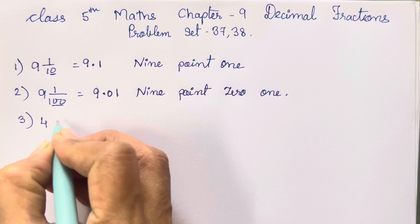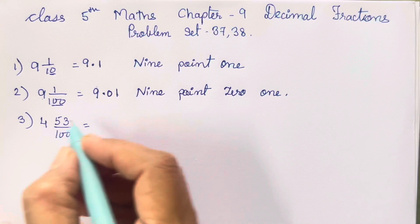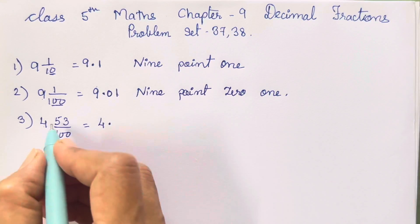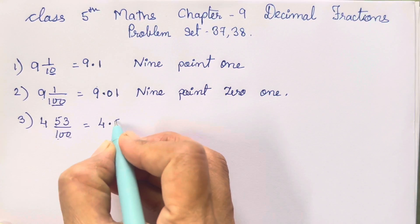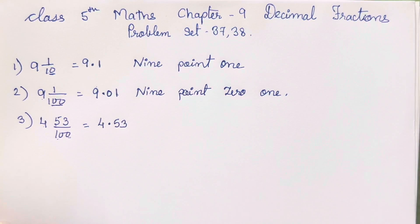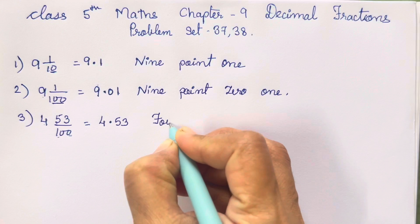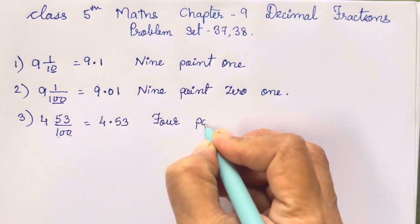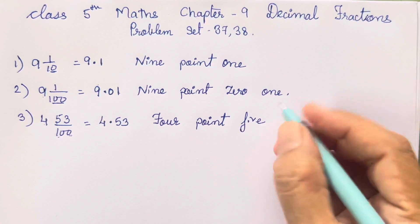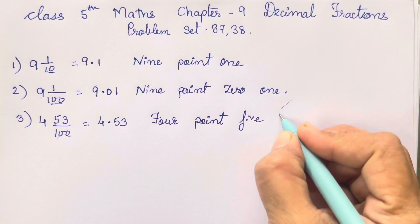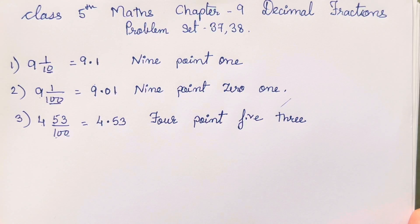The third one is 4 and 53 upon 100. So 4 will come before the decimal point. You will see already two digits are there — we need two digits because there are two zeros. So two digits are already there; we will write 53 directly. How are you going to read this? 4.53. Not 53 — it is going to be 5, 3.